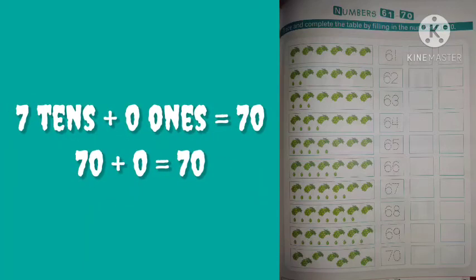Now, see in the last box — 1, 2, 3, 4, 5, 6, 7 — 7 bunches of 10 graphs. That means 7 tens and no single graphs, that means 0 ones. 7 tens means 70 and 0 ones means 0. 70 plus 0 is 70.